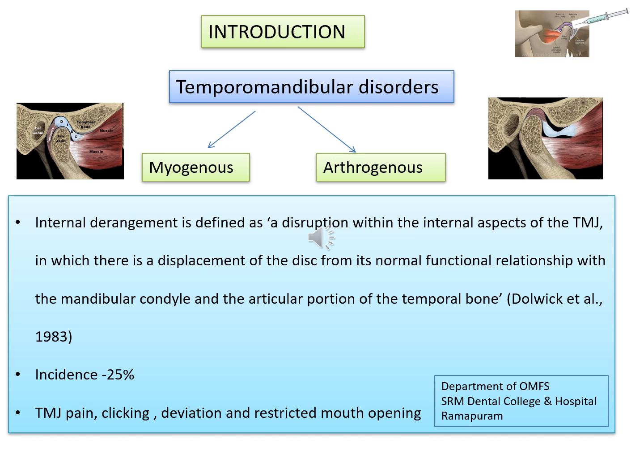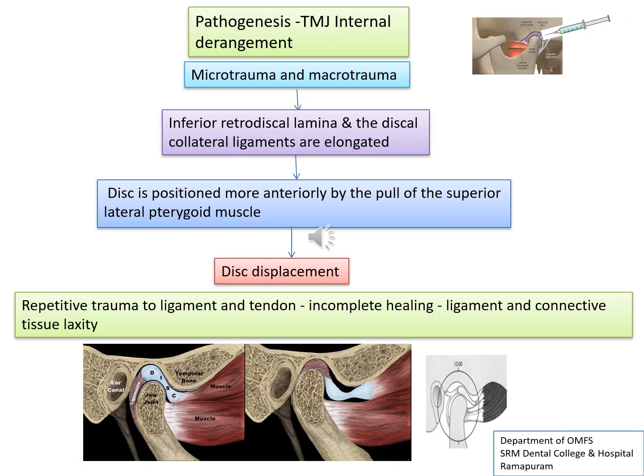It manifests with TMJ pain, clicking, deviation, and restricted mouth opening. TMJ internal derangement may be caused by microtrauma and macrotrauma, which leads to elongation of the inferior retrodiscal lamina and discal collateral ligaments. That causes positioning of the disc more anteriorly by the pull of the superior lateral pterygoid muscle, which in turn leads to disc displacement.